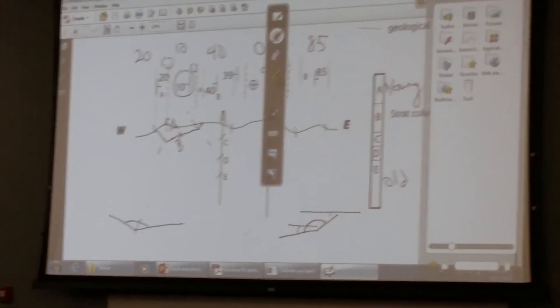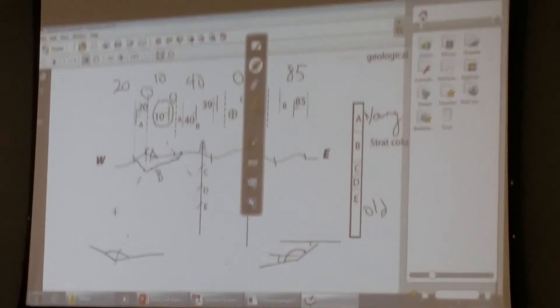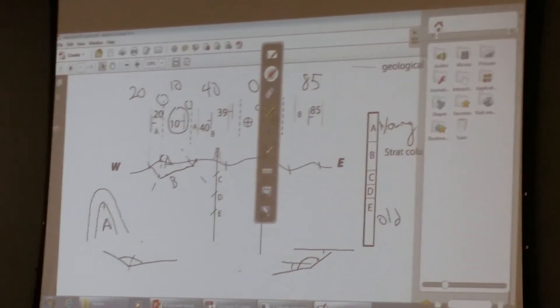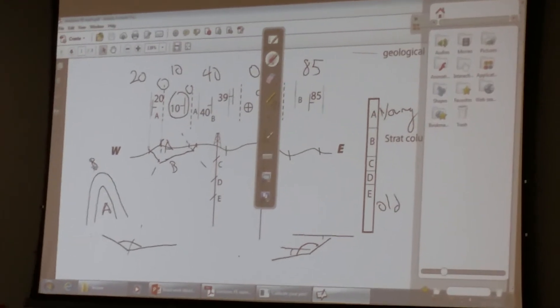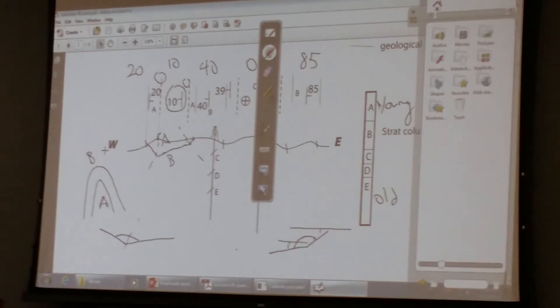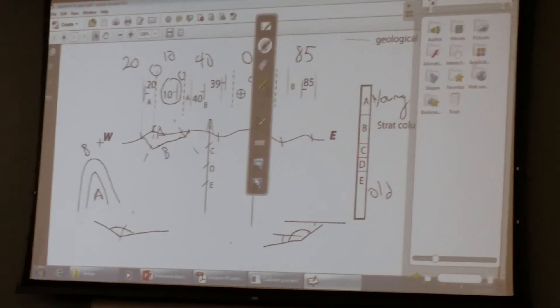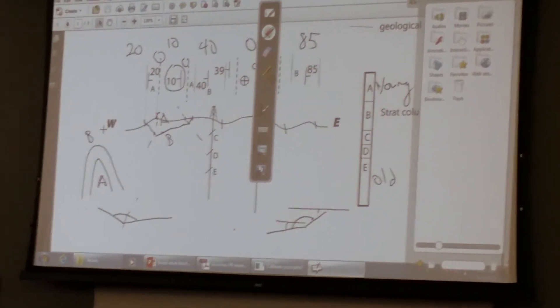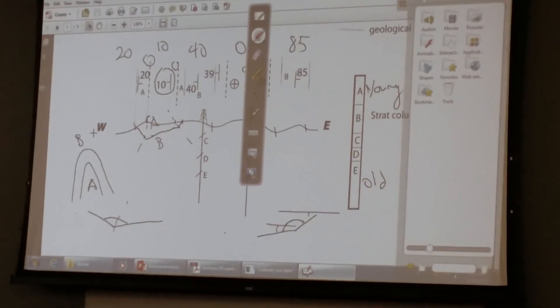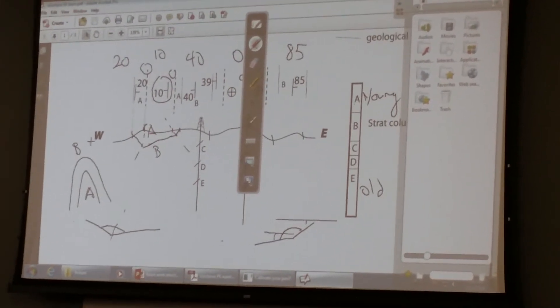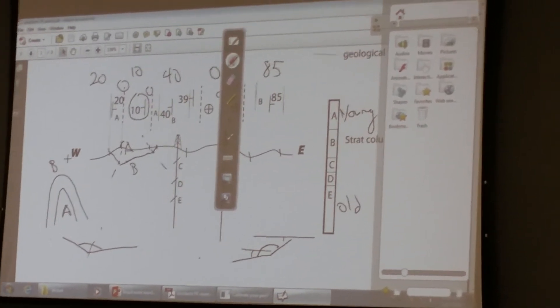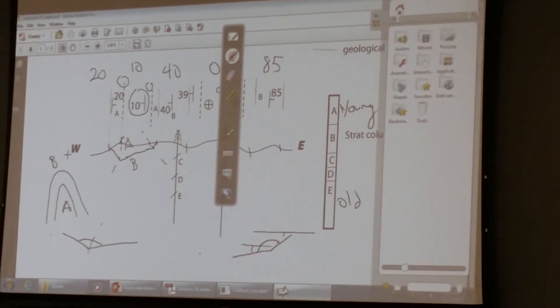And so this is an example - if you have a fold like this and A is in the middle and B is on the outside, and A is younger, that's still a syncline, even though it has a positive shape, but it's called an antiformal syncline. So a syncline just tells you about age, it doesn't tell you about the shape. A synform or antiform will tell you the shape.